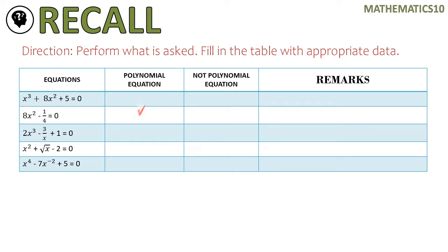For number one, it is considered a polynomial equation. If you recall the definition of polynomial, the emphasis is that the exponent of the variable must be positive whole numbers including zero. Here, x cubed plus 8x squared plus 5 equals zero — all the exponents of the variables are positive whole numbers. Therefore, it's a polynomial equation.